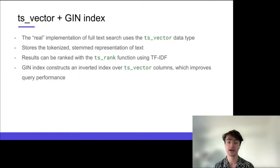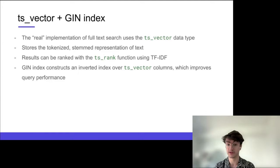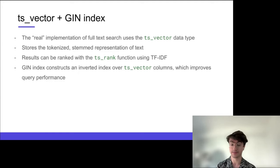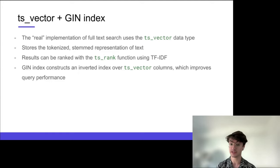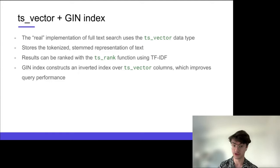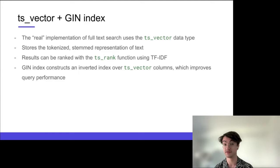In contrast, a word like 'the' is very frequently present across the entire corpus, so it conveys little information about whether a document should rank higher. tsvector doesn't require any index — you can use it purely as a data type, but then Postgres needs to scan the entire table row by row (a sequential scan), which is very slow. Postgres has inverted indices — data structures representing the mapping between words and where they're found — and using them makes full-text search much faster. In practice, virtually every full-text search implementation uses an inverted index.